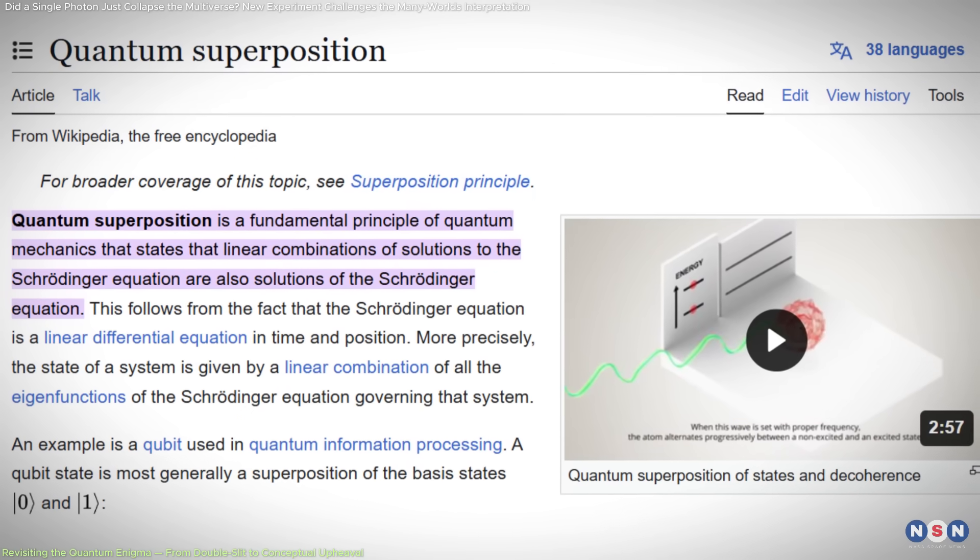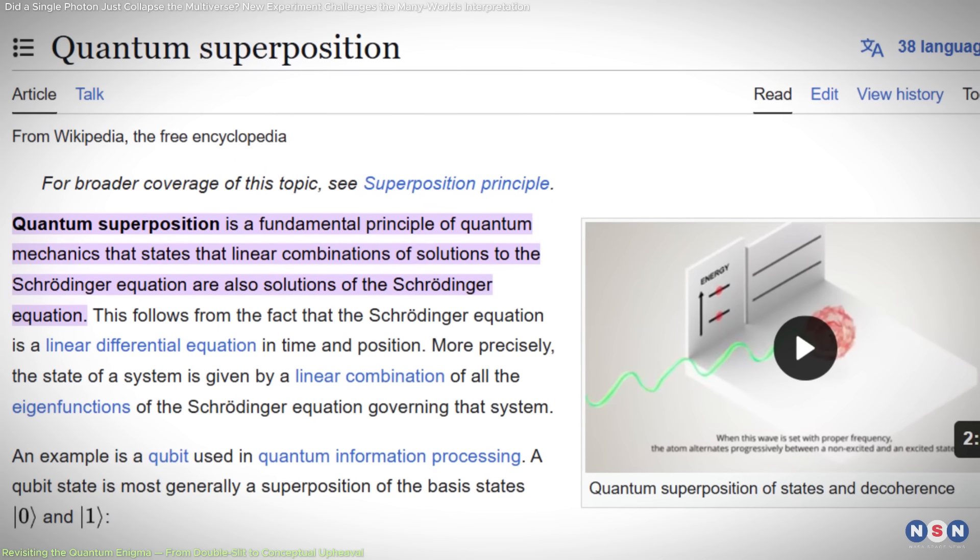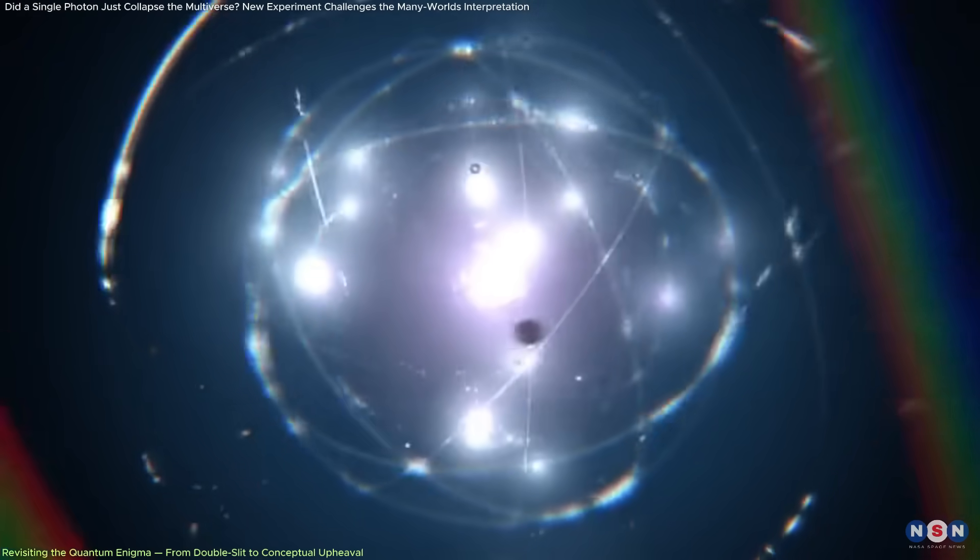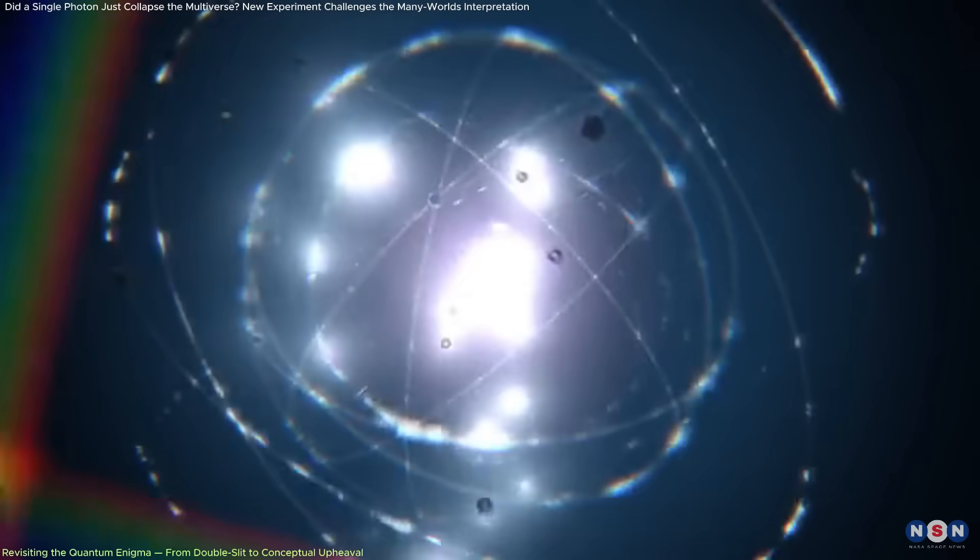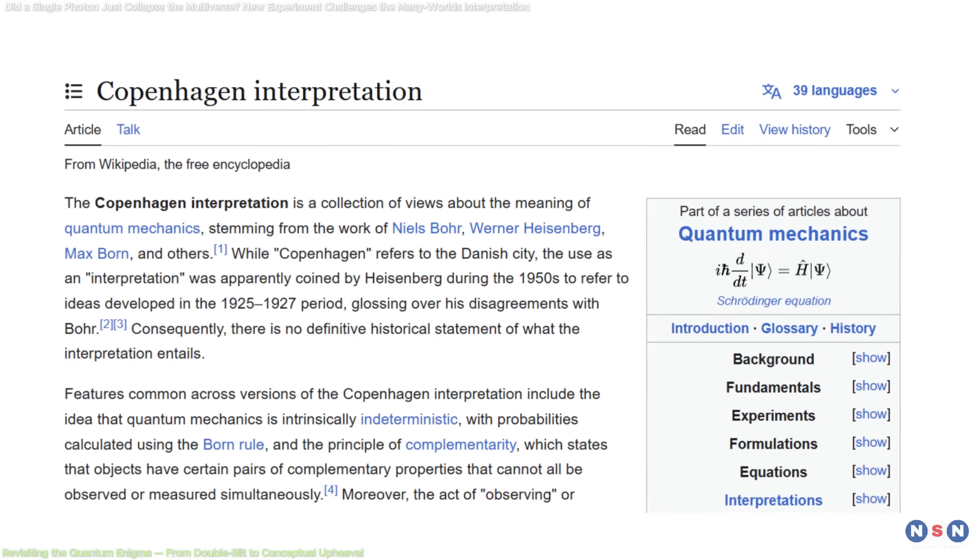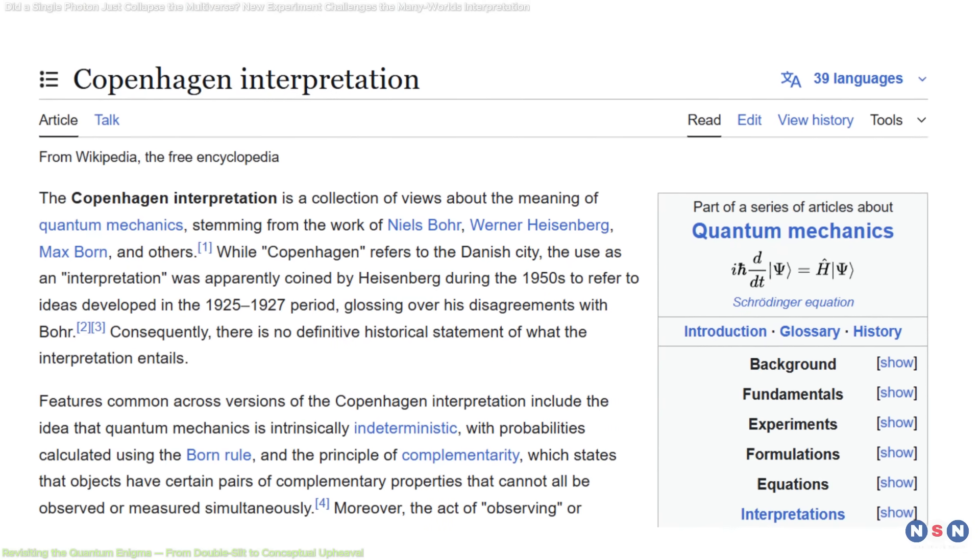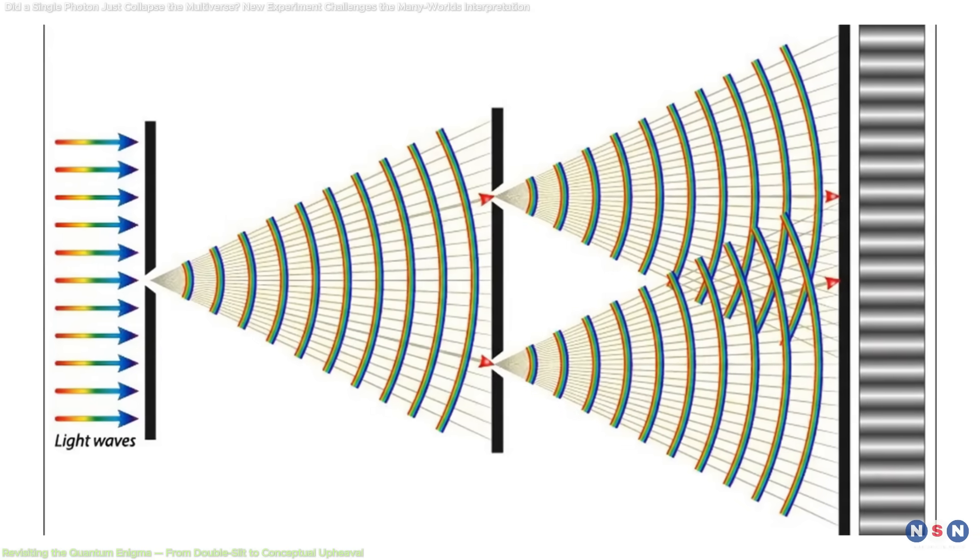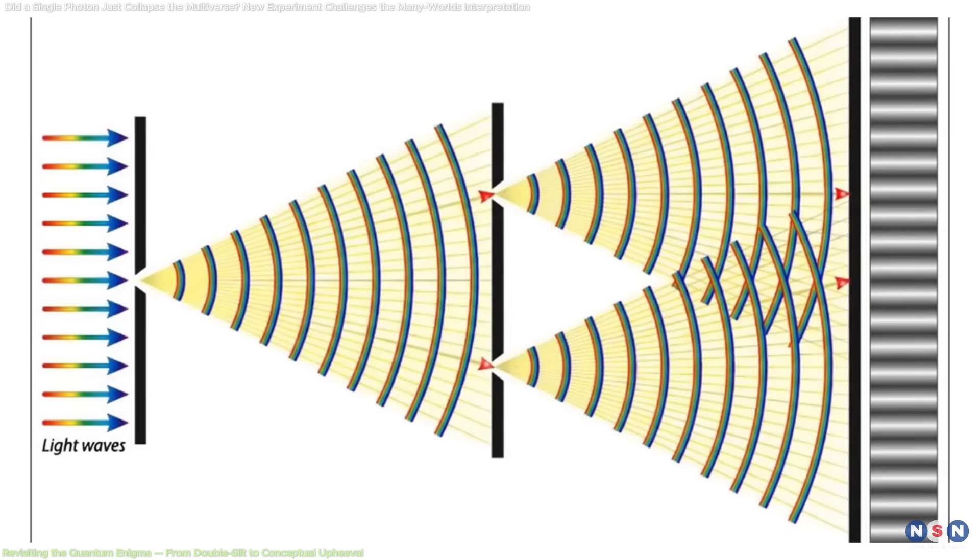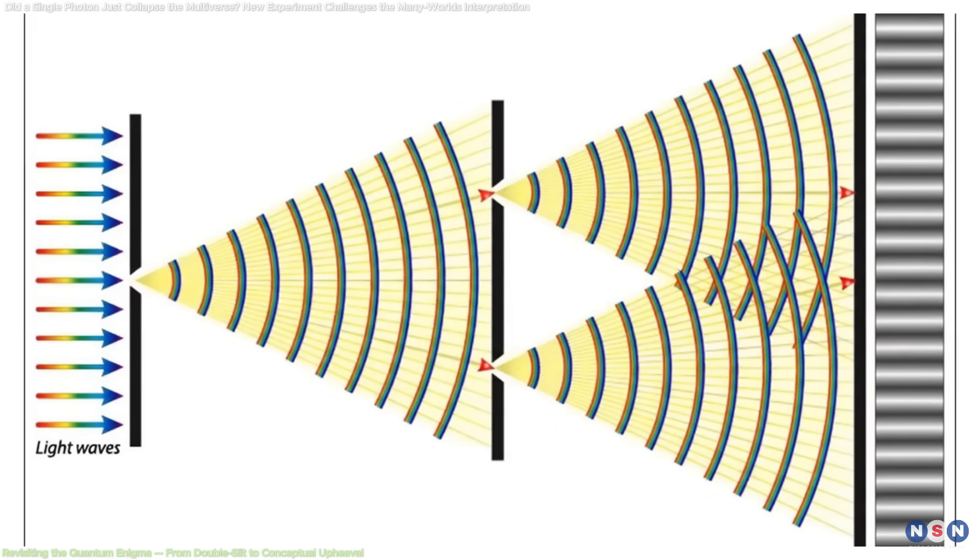This duality underpins the concept of quantum superposition, where a particle appears to exist in multiple states simultaneously until a measurement forces it into one. This paradox led to different philosophical interpretations. One dominant model, the Copenhagen interpretation, treats the wave function as a complete description of a particle's potential states, with physical reality only settling when observed.